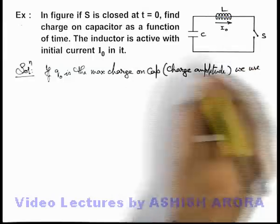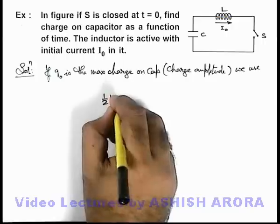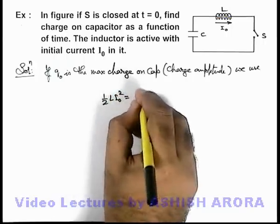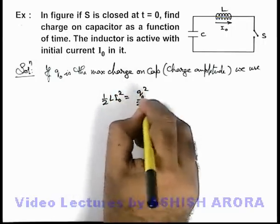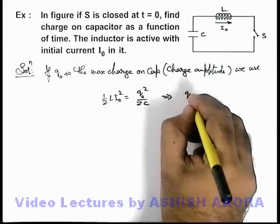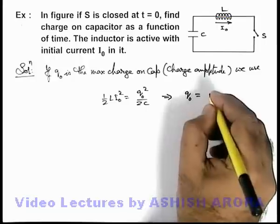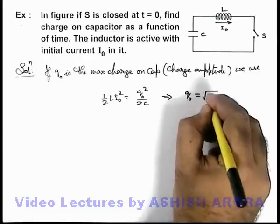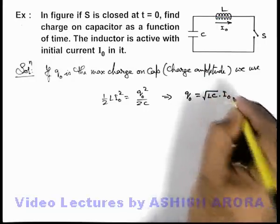So here, if q₀ is the maximum charge on capacitor, we use ½LI₀² equals q₀²/2C. And on simplifying, you can see the value of maximum charge or charge amplitude on capacitor can be written as √(LC) × I₀.